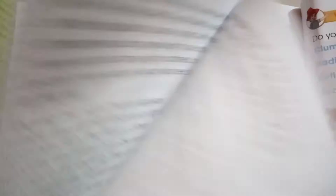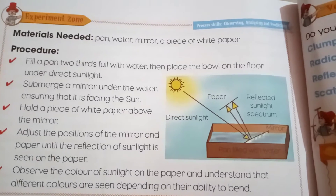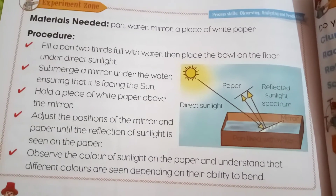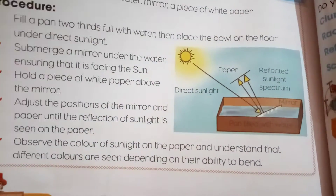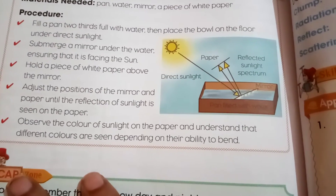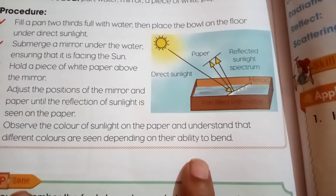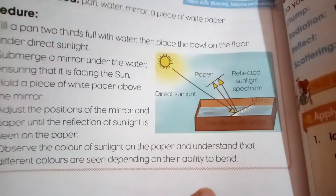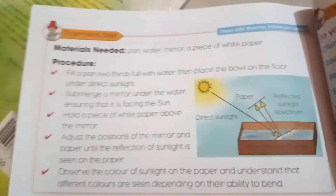We have also done this experiment on page number 150. Fill a pan two-thirds with water, then place the bowl on the floor under direct sunlight. Put a mirror under the water facing the sun. Hold a piece of white paper above the mirror and adjust the positions of mirror and paper until the reflection of sunlight is seen on the paper. Observe the colors of sunlight on the paper and understand that different colors are seen depending on their ability to bend. You can do this experiment with the help of your adults, parents, brothers, or sisters, but not alone.